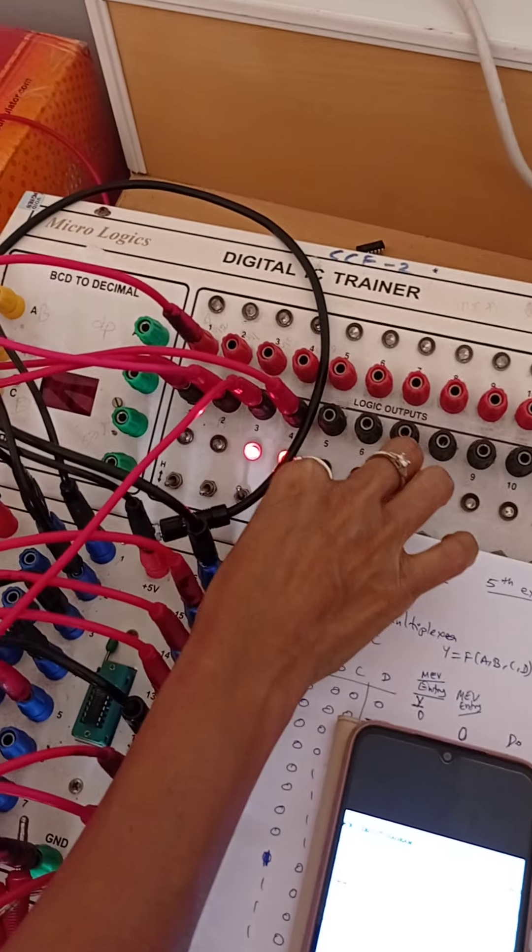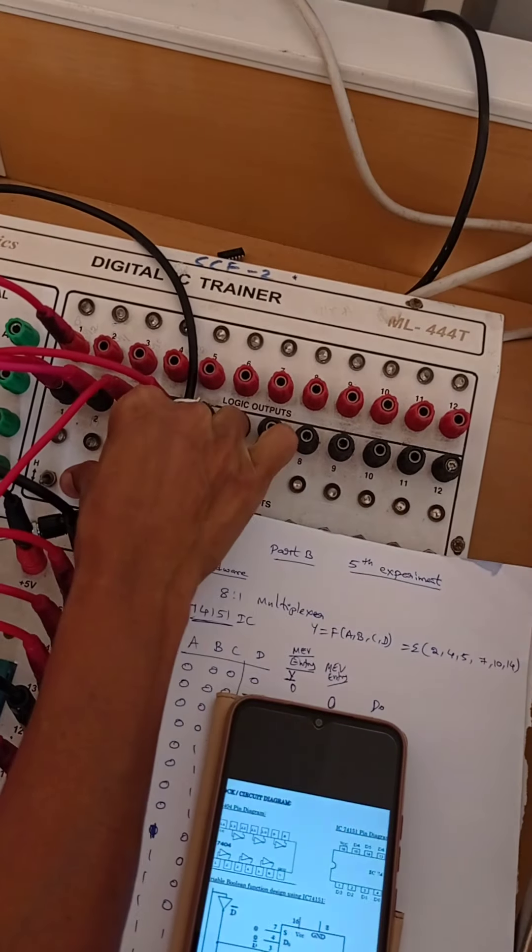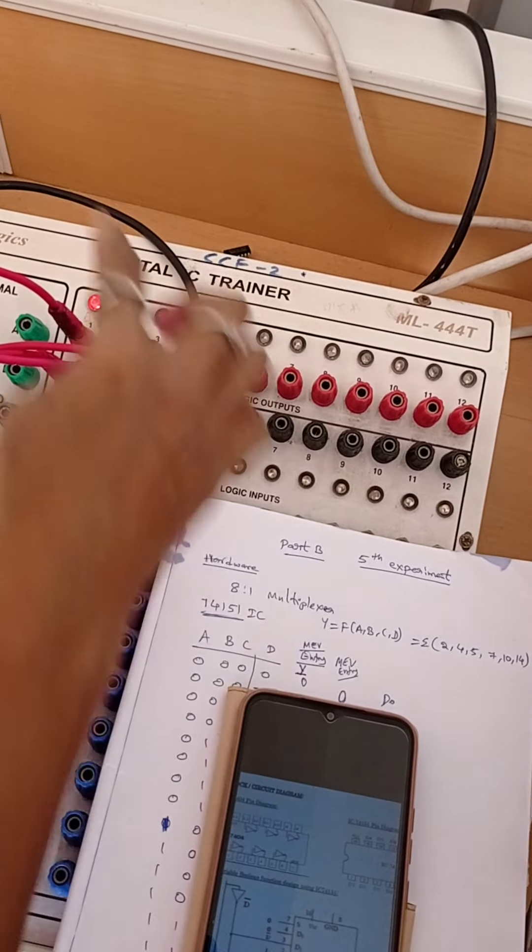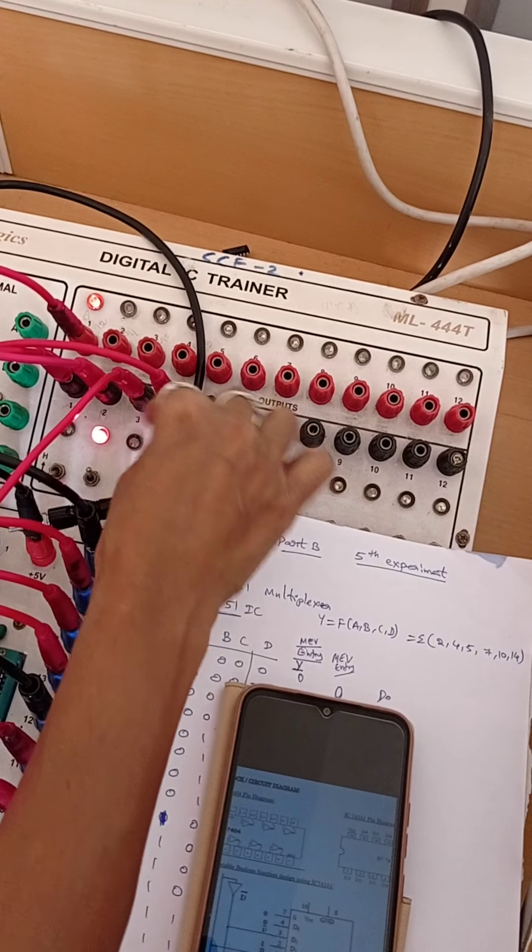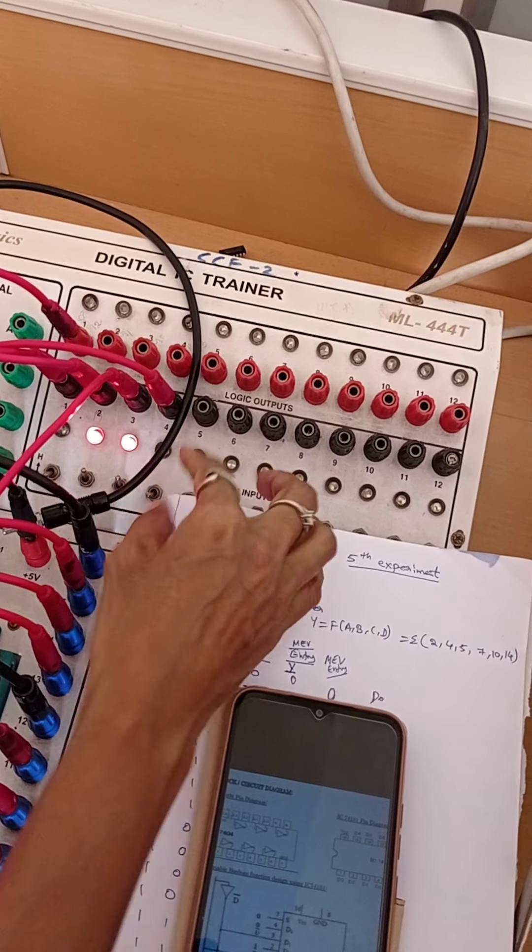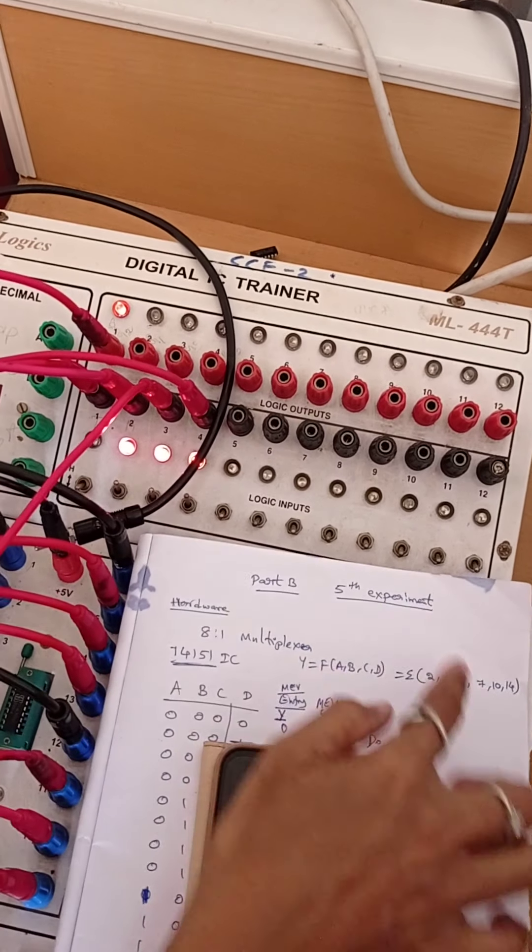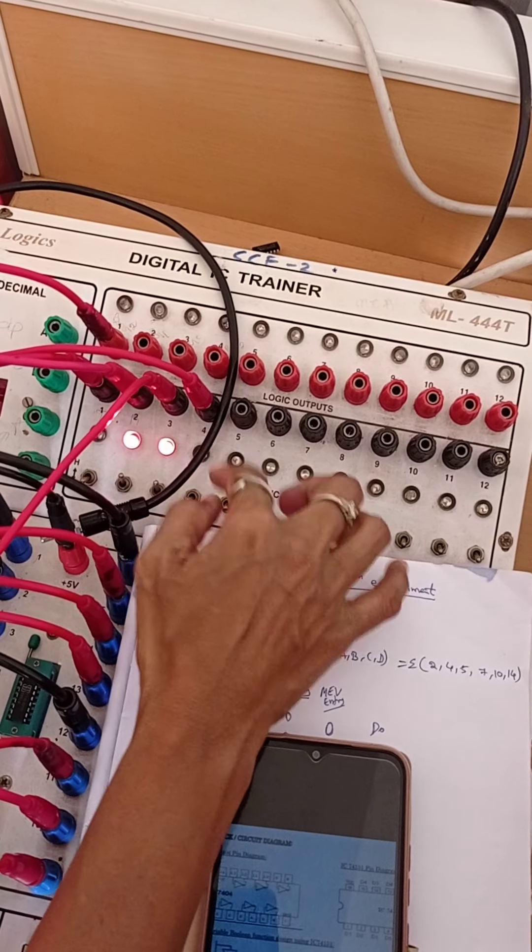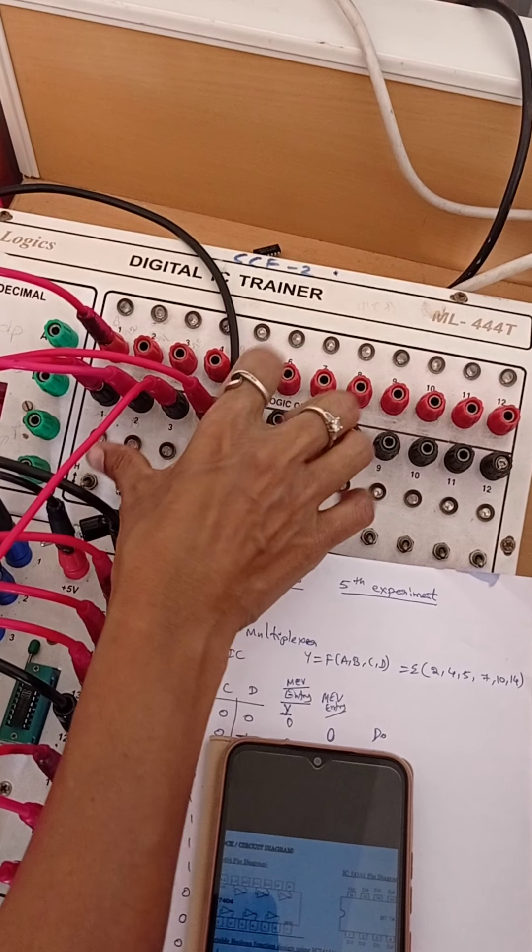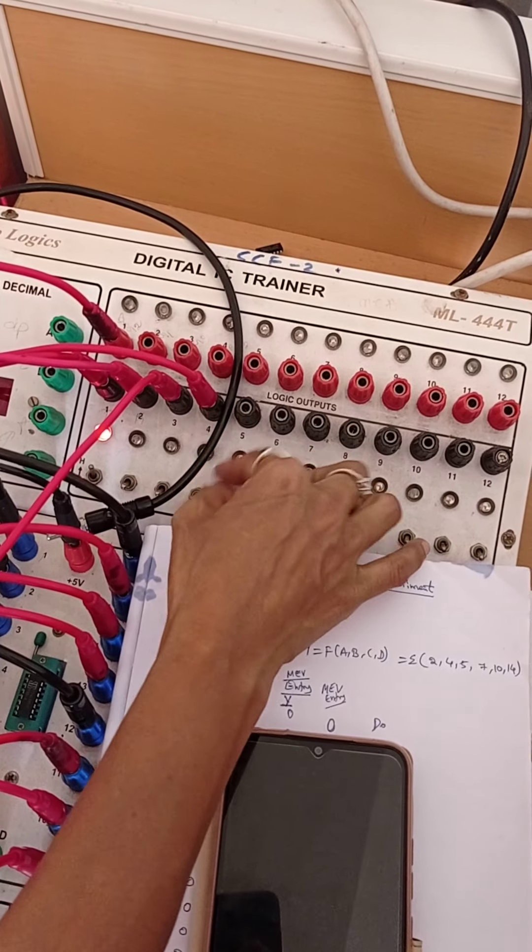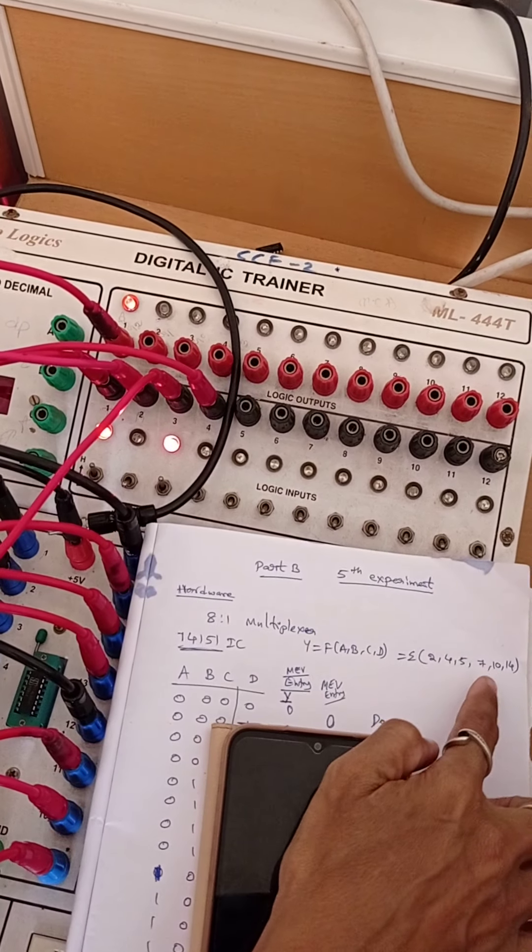Next 3, output should be low. Next 4, output should be 1. 5, output should be 1. Next 6, output should be low. For 7 it should be high. 8 low, 9 low. For 10 it should be high.